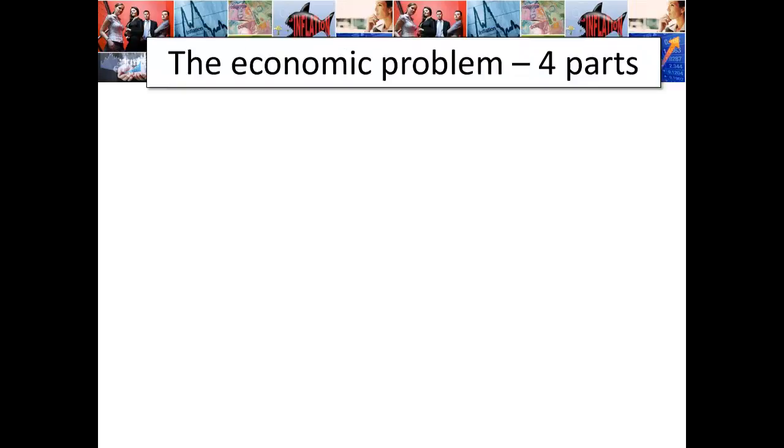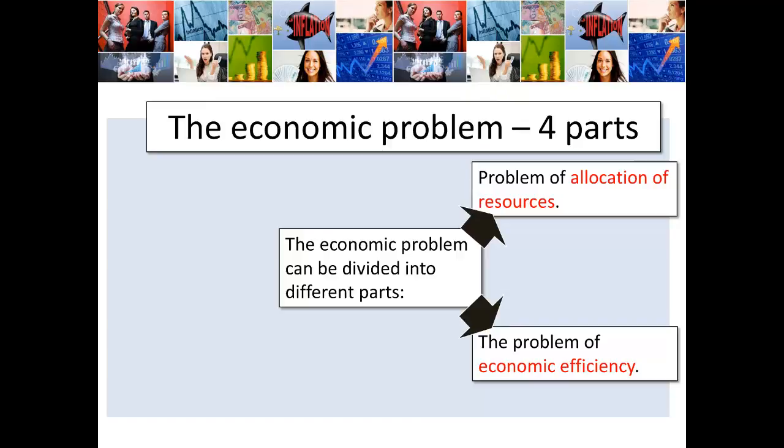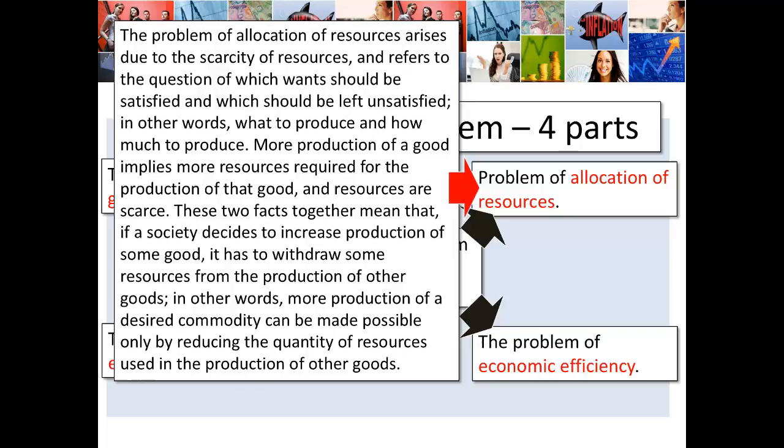The economic problem can be divided into four parts: the problem of allocation of resources, the problem of economic efficiency, economic growth, and the problem of full employment of resources. The allocation problem arises due to the scarcity of resources — it refers to the question of which wants should be satisfied and which should be left unsatisfied, i.e., what to produce and how much to produce. More production of a good requires more resources, so if a society decides to increase production of one good, it must withdraw resources from producing another — remember the concept of opportunity cost.